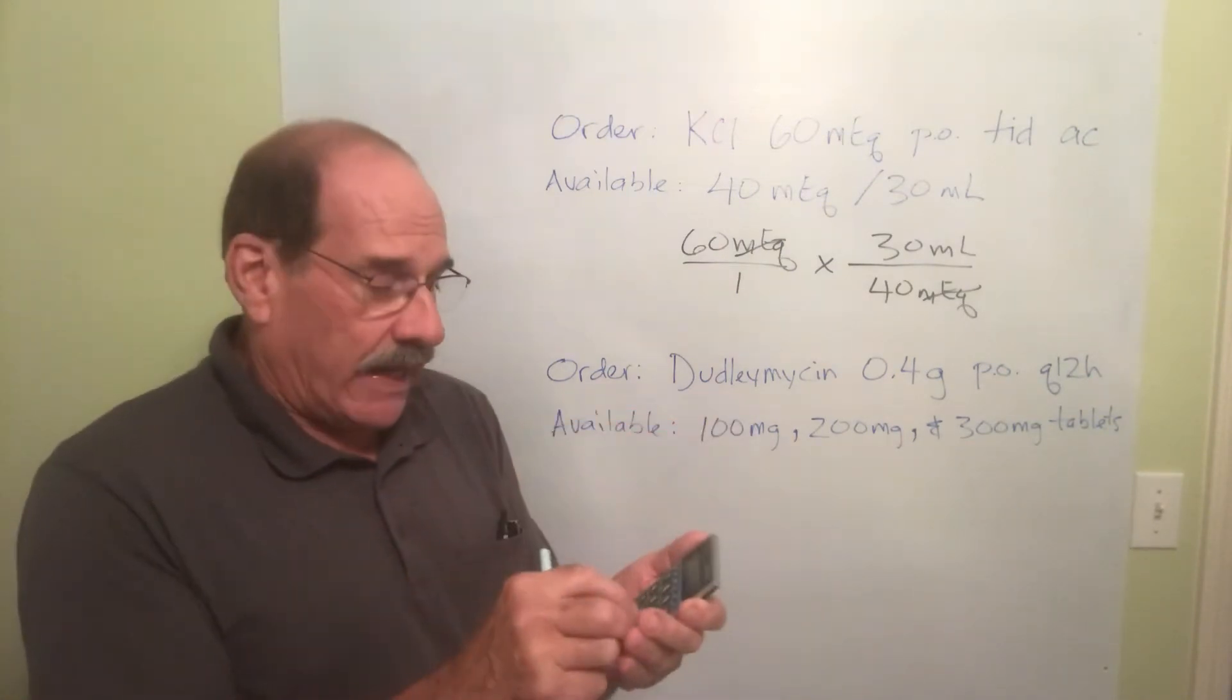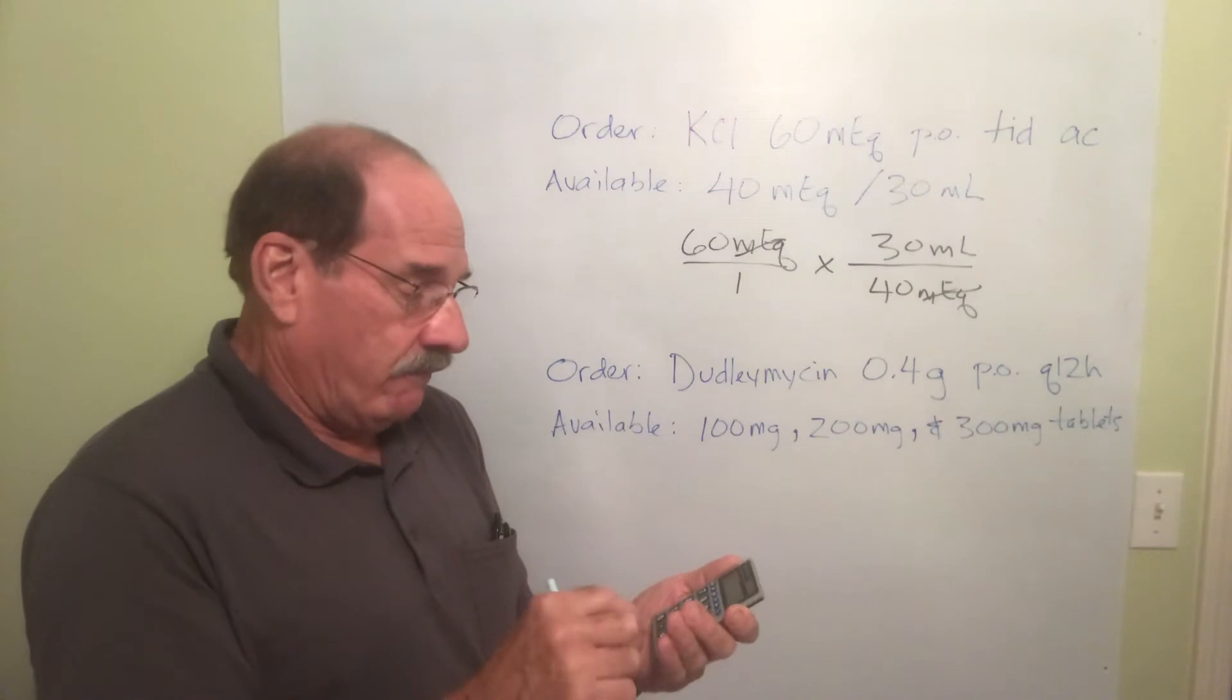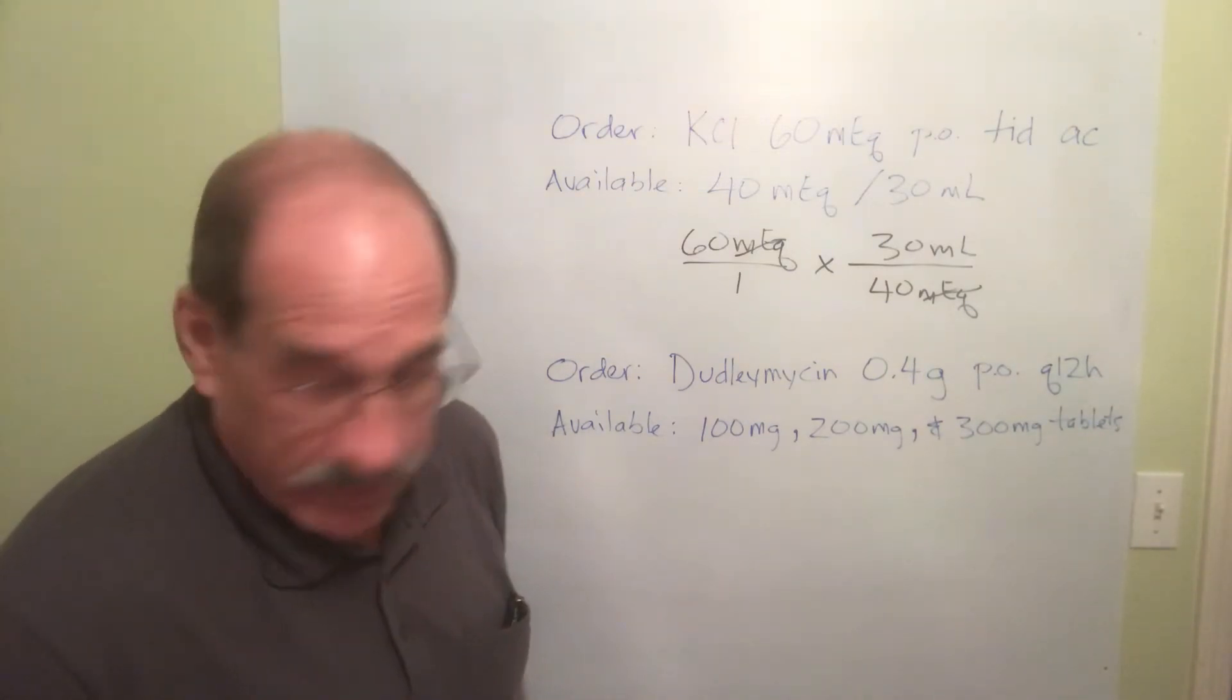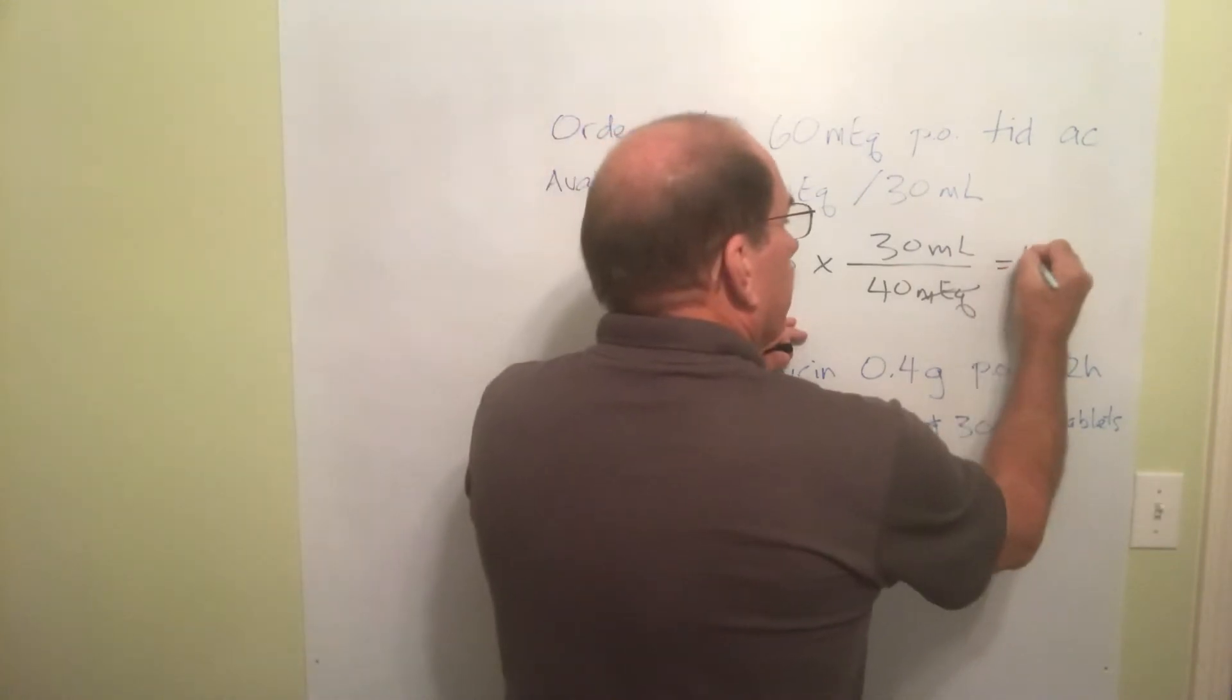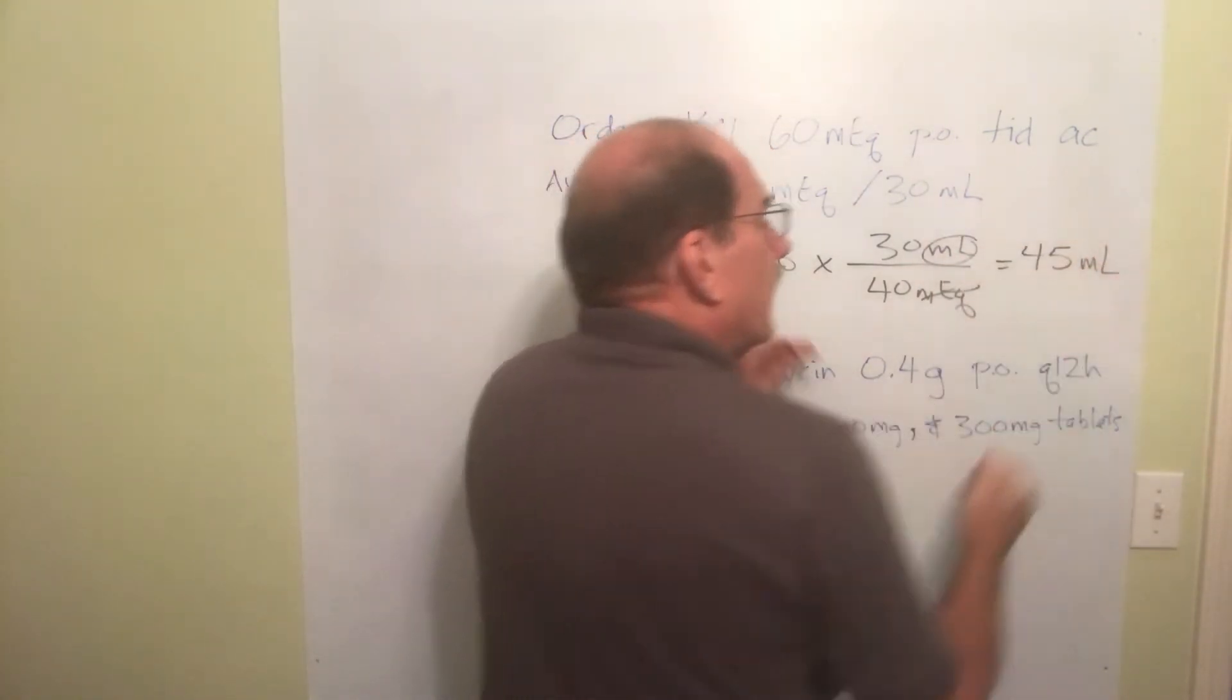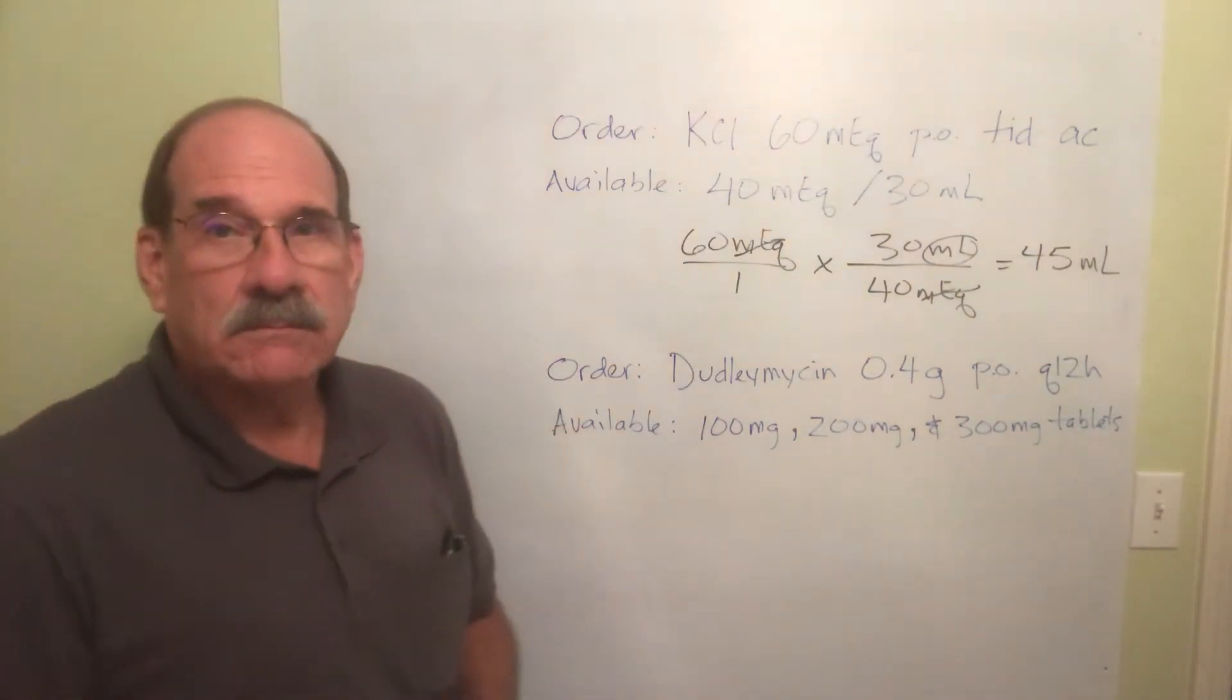Then we divide by 40 and the answer is 45. We give 45, whatever that says, milliliters. There you go.